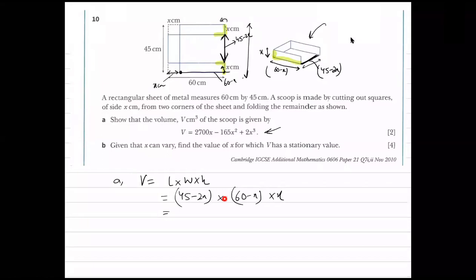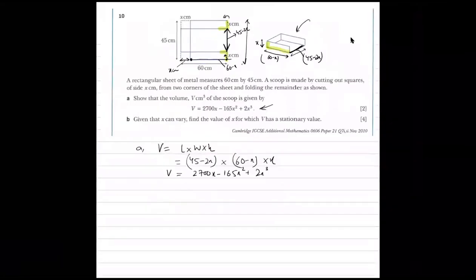Is everyone able to prove that after multiplication, you are going to get volume equals to 2700x minus 165x squared plus 2x cubed? Is everyone getting this? Yes, sir.